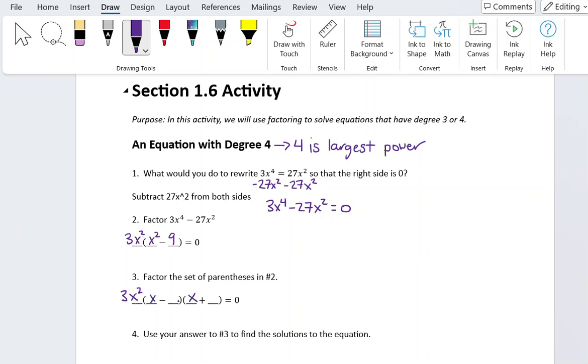Our number here is a number that multiplies by itself to equal 9, and that would be 3. So we have x minus 3 and x plus 3.